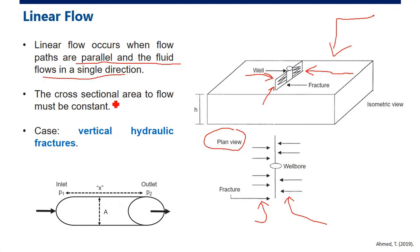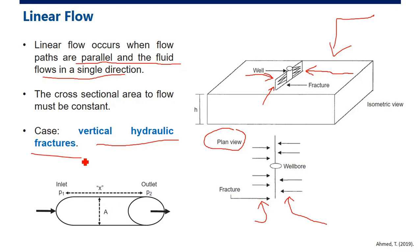The cross-sectional area to flow must be constant for linear flow. This is the case for a vertical hydraulic fracture — when we conduct hydraulic fracturing we will have a vertical fracture and therefore linear flow.